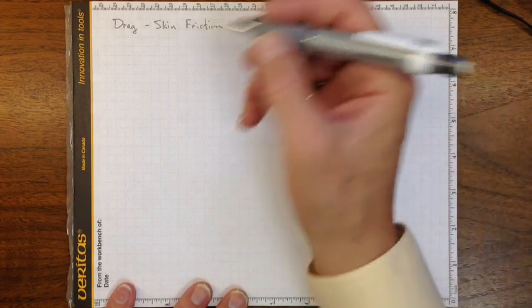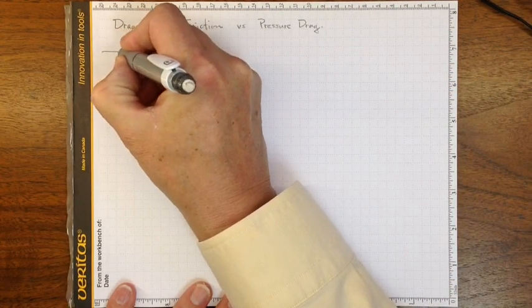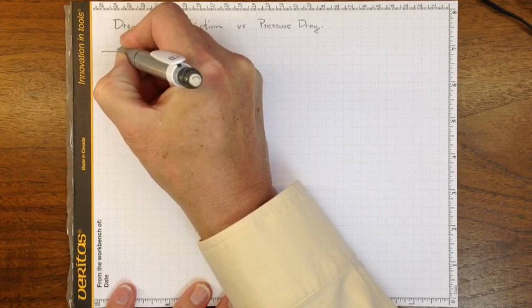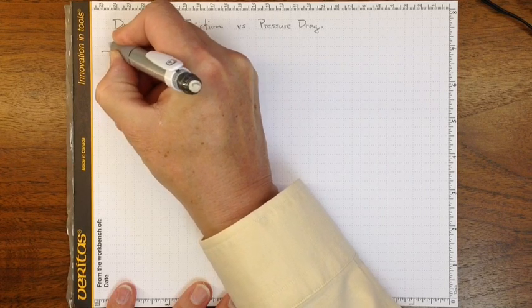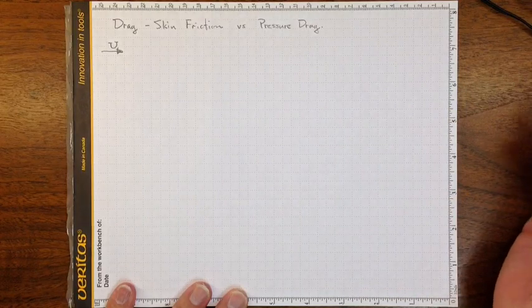If I'm carrying a sheet of plywood in the wind, so that the wind is coming in this direction with some general velocity of capital U, say,